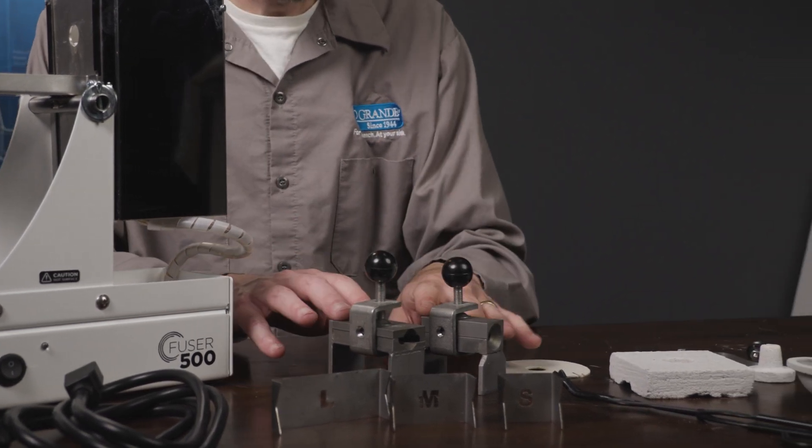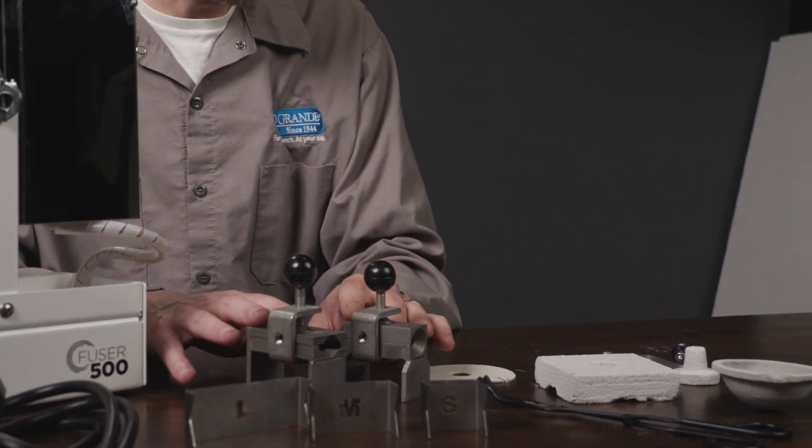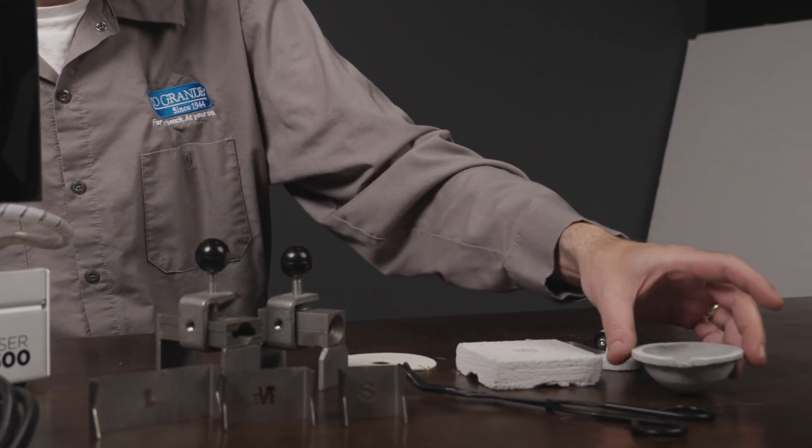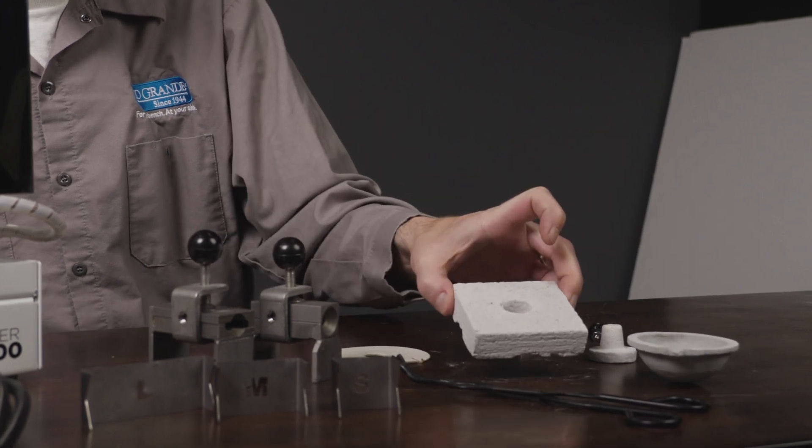We have two ingot molds, one for making flat stock and one for making round stock, a pair of tongs for grabbing our flasks, the crucible, and a crucible cover.